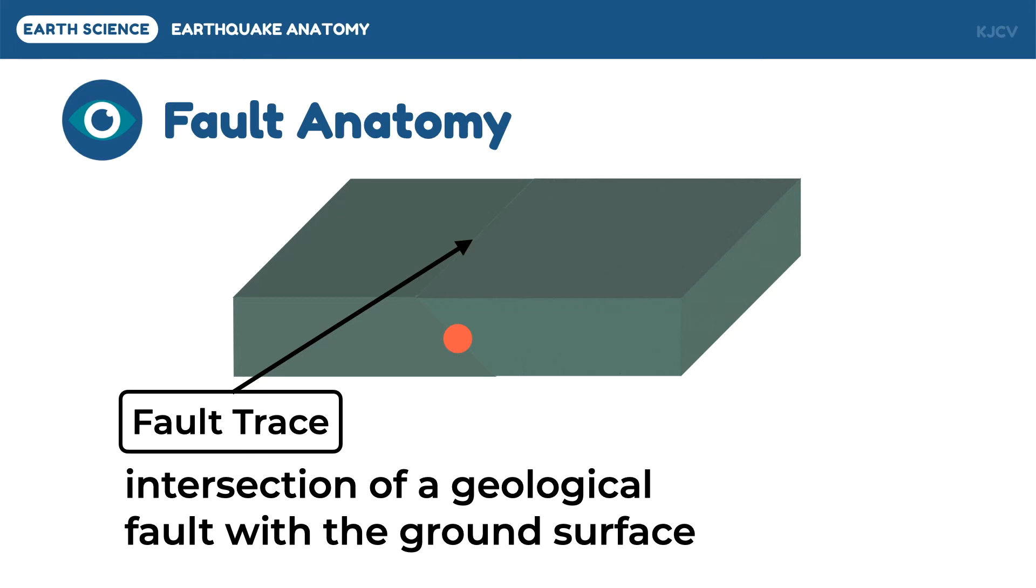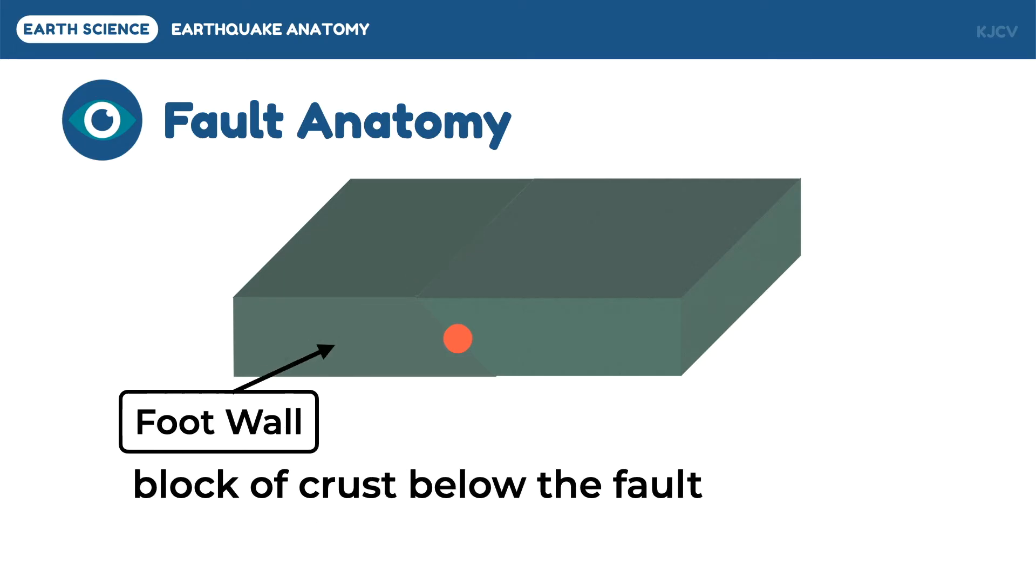Since the fault line fractures the block of the crust, two distinct parts are formed. First, there is the structure called the foot wall. The foot wall is the block of the crust below the fault. To easily remember this, use the analogy that our feet are always on the lowermost part.